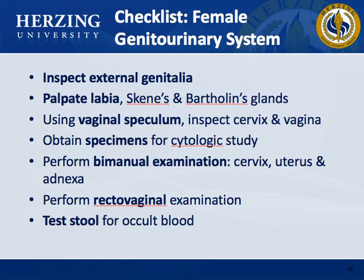The checklist for female genitourinary system assessment: inspect external genitalia; palpate labia, Skene's glands, and Bartholin's glands; using a vaginal speculum, inspect the cervix and vagina; obtain specimens for cytological study; perform bimanual examination of the cervix, uterus, and adnexa; perform recto-vaginal examination; and test stool for occult blood.